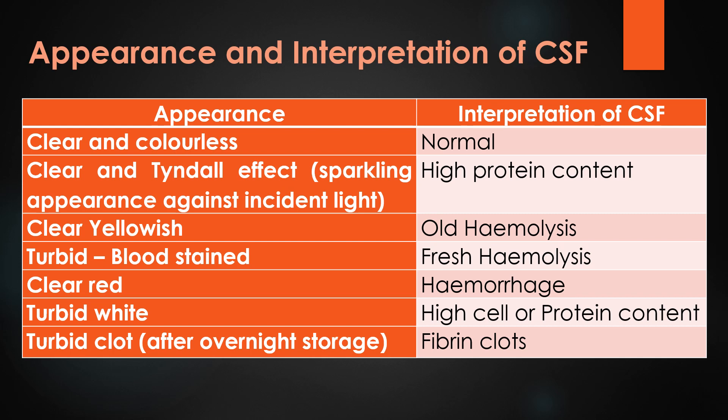This table shows the appearance and interpretation of cerebrospinal fluid collected from patients. In normal condition, the cerebrospinal fluid is clear and colorless. A clear form with Tyndall effect shows high protein content. A clear yellowish appearance shows old hemolysis. Turbid blood-stained appearance shows fresh hemolysis. A clear red appearance shows hemorrhage. Turbid white appearance shows high protein or high cell content. A turbid clot after overnight storage shows fibrin clots.